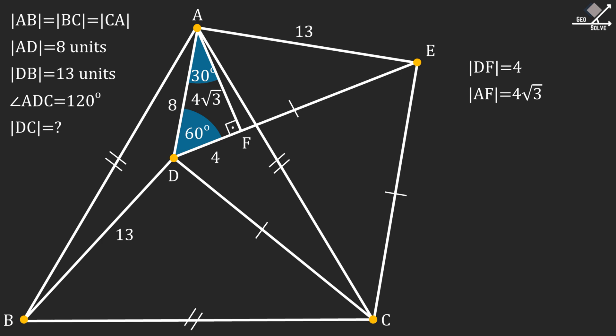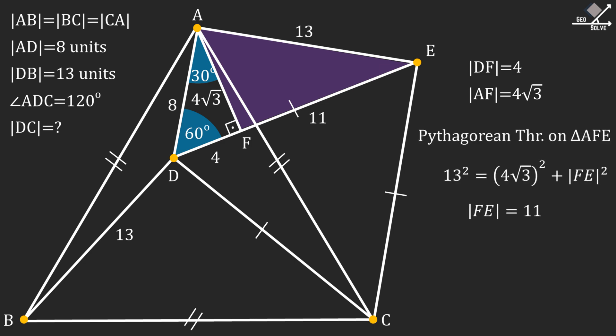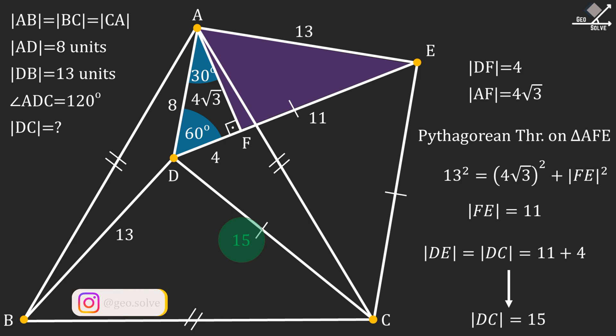Now we can apply the Pythagorean theorem to the shaded triangle to find the length of line segment FE. Plugging in the known values, line segment FE can be found as 11 units. Since DE equals DC, our answer will be equal to 15 units.